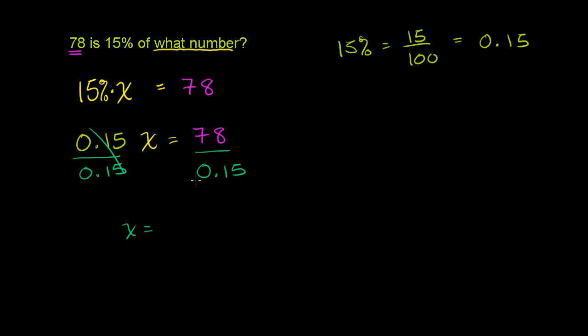x is equal to 78 divided by 0.15. Now, we have to figure out what that is. If we had a calculator, pretty straightforward, but let's actually work it out. So we have 78 divided by, and it's going to be at some decimal number. It's going to be larger than 78, but let's figure out what it ends up being. So let's throw some 0's out there. It's not going to be a whole number. And we're dividing it by 0.15.